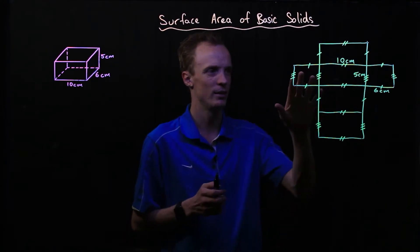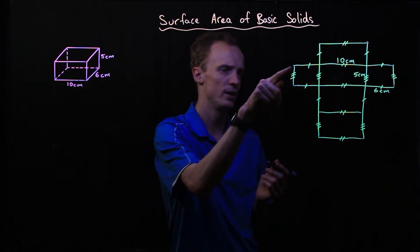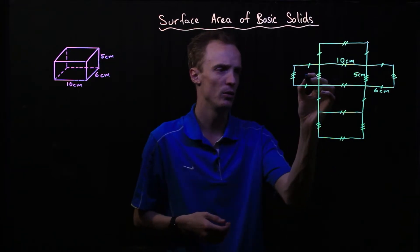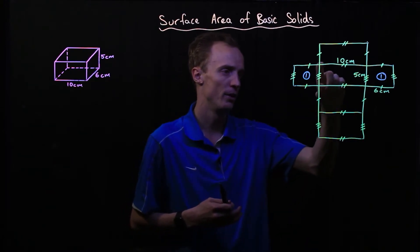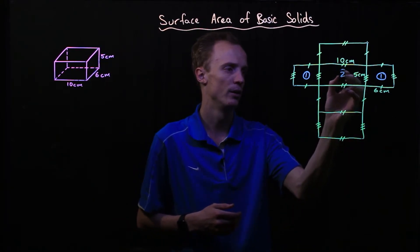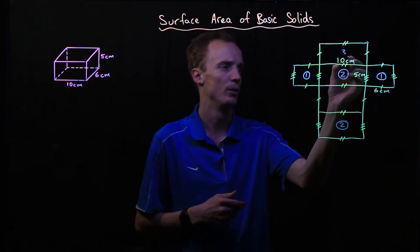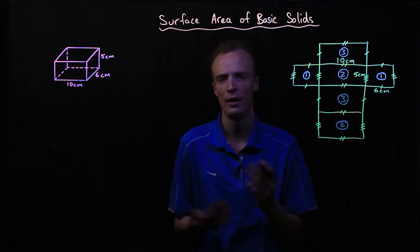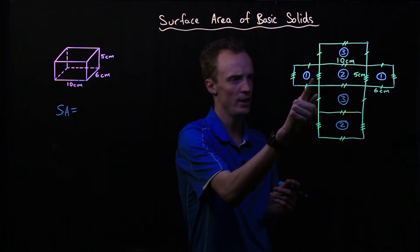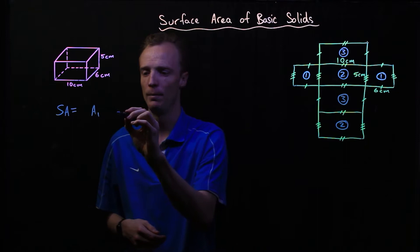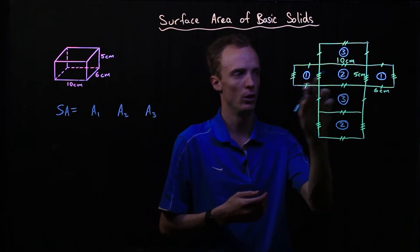Now that we've got our net diagram with all the dimensions on it, the next thing I like to do is look at the actual faces and ask: are there any repeating faces? I can see this face here has the same dimensions as this face here, so I call this Shape 1, and we've got two of them. I then look at the others — this face here is repeated down here, so I call this one Face 2. And then this face and this face here I call Face 3. We have two of each.